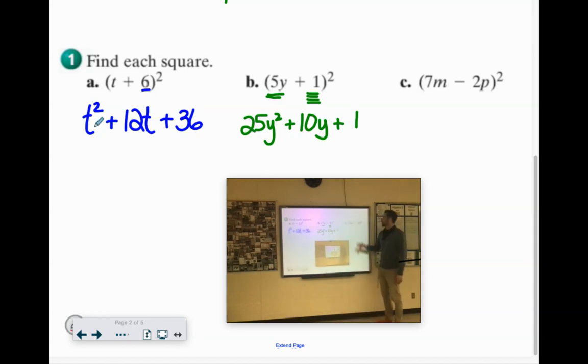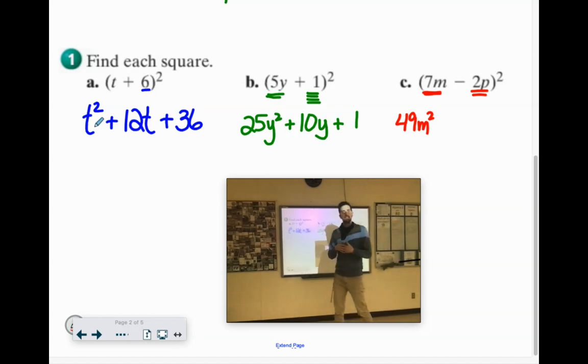Cool. One more. 7M times 7M is 49M to the second. Now, when we're multiplying different letters here, like you're doing M times P, you just mush them, make it MP. You typically just put them in alphabetical order.